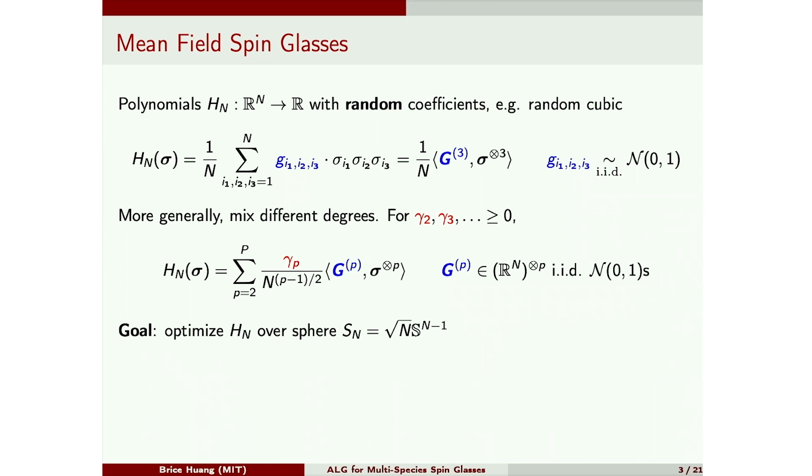A quantity that will appear a lot whenever you're talking about these spin glasses is this mixture function, which is a sort of generating function of the gamma squared. So for example, for this cubic, this is just q cubed. And this shows up because this polynomial can be thought of as a Gaussian process whose covariance is determined by this mixture function.